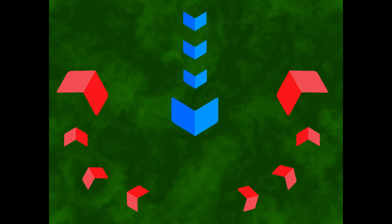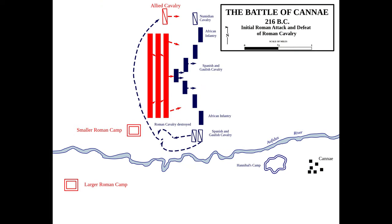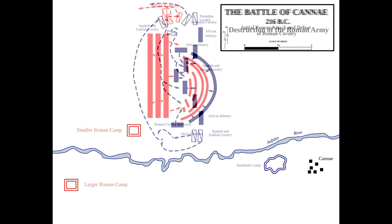Most enemy generals are not stupid — they're not going to just allow you to flank them, so various strategies and tactics were used to set up this type of formation. It would often be called the crescent or inverted crescent because it starts as a half-moon shape, and as the enemy advances into your center you would purposely give way, making it look like a retreat when in fact it was all part of the plan, simply giving up the middle to surround the enemy on the sides.